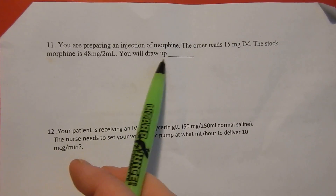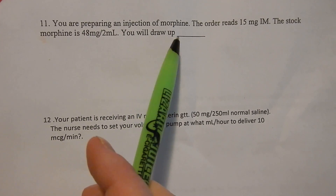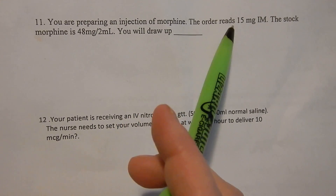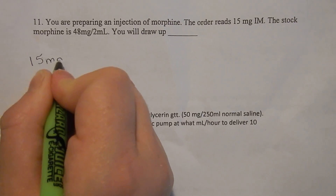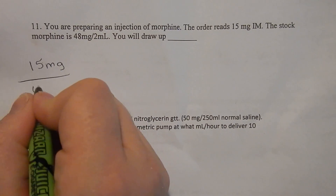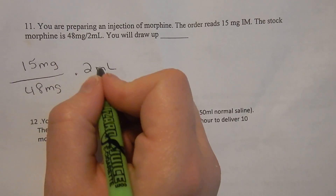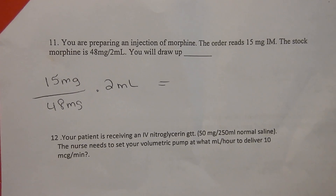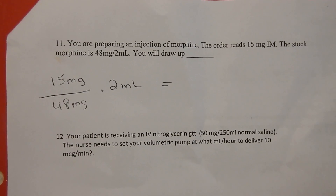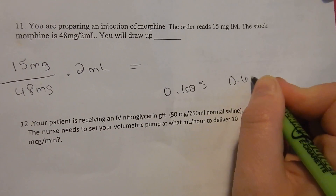You're preparing an injection of morphine, so we know it's an injection and we're going to need a syringe. This is another order over on hand. We order 15 milligrams over 48 times 2 mL because we want mL as the answer. So: 15 divided by 48, times 2, equals 0.625. But we know we can't pull that up precisely in a syringe, so we're going to round it to 0.6 mL.